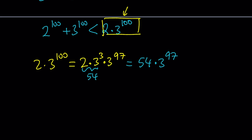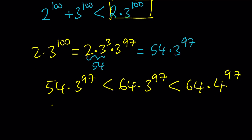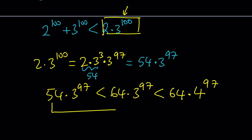So let's go ahead and set it up like this. Notice that 54 times 3 to the 97 is less than 64 times 3 to the 97, because 54 is less than 64. And definitely this is less than 64 times 4 to the power 97. When we write it this way it makes more sense because we have a chain of inequalities. 54 is less than 64, and 4 to the power 97 is greater than 3 to the 97.